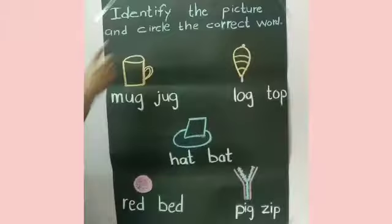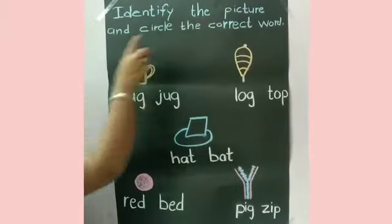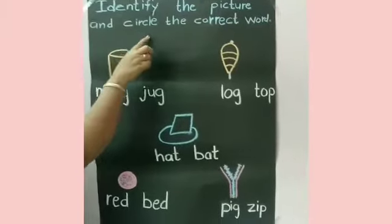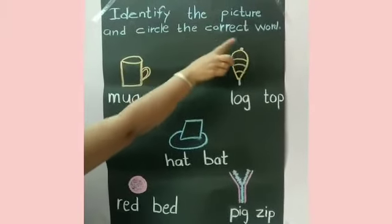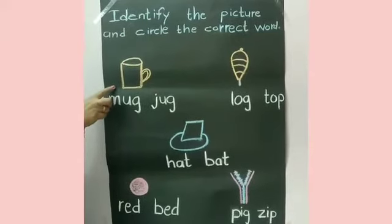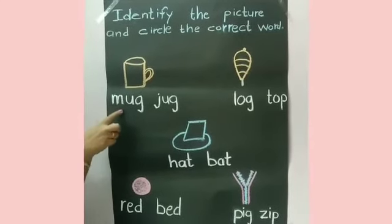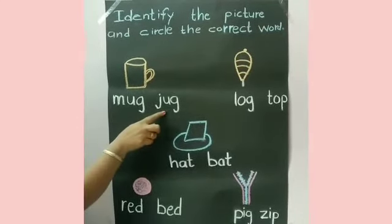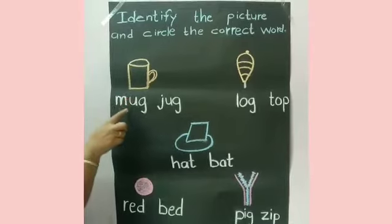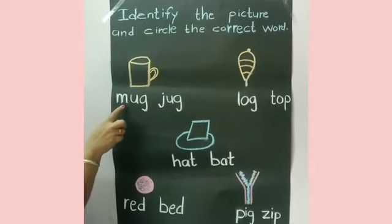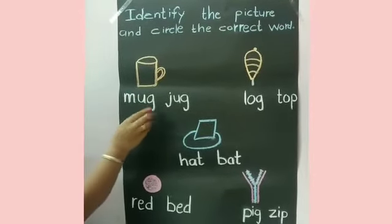Now we will do an activity related to CVC words. Identify the picture and circle the correct word. Which picture is this? Yes, it is a mug. So, M-U-G mug, J-U-G jug. We will circle on mug.